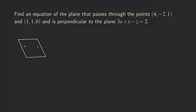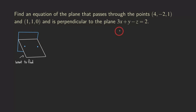So this is the plane that we want to find. And then what about the given plane that's perpendicular to the plane we're trying to find? We can just draw a plane that's perpendicular to this one. All the objects that we're drawing in blue are given — this one is 3x + y − z = 2, and the two blue dots represent the two given points.